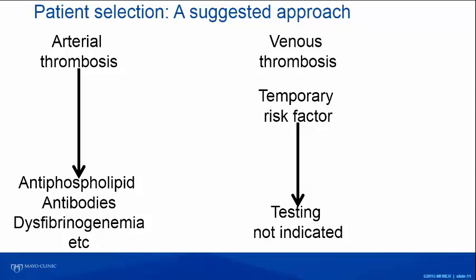If you have a patient with arterial thrombosis, our thrombophilia profile at Mayo is designed to look at patients with venous thrombosis. For arterial thrombosis you should focus on antiphospholipid antibodies and other acquired risk factors like smoking, hypertension, and hyperlipidemia. When I say arterial thrombosis, I'm referring to strokes, myocardial infarctions, and rarely peripheral arterial embolism.